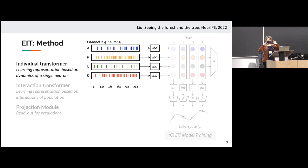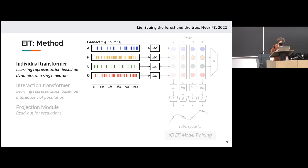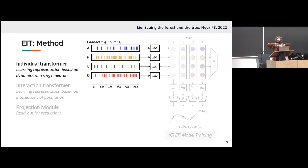You can think about this separable decomposition as being implemented in many different types of architectures. You could build this into an RNN, but we chose, in our model — the Embedded Interaction Transformer or EIT — to implement this with a transformer, mainly because it's a very flexible architecture. We can use self-attention to find non-local interactions happening over time in a neuron's activity sequence, and we can also use a transformer to find interactions happening across neurons, potentially in a non-local way as well.